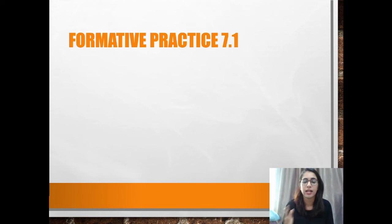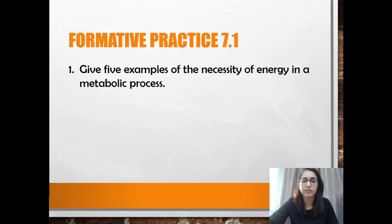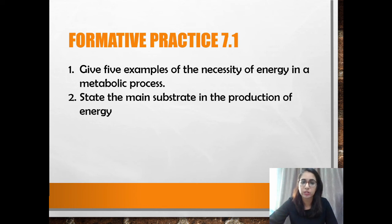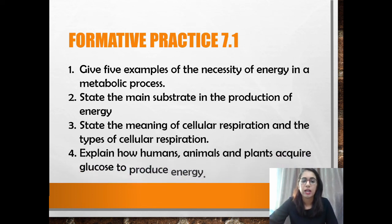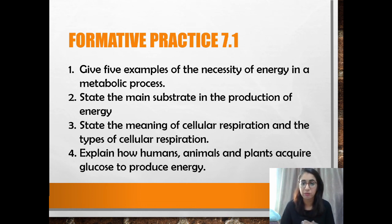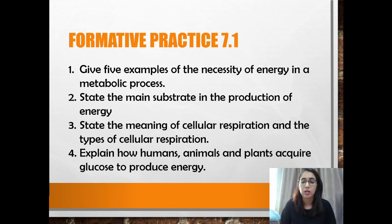Okay, so with that said, we are done for subtopic 7.1. What you are going to do next is do formative practice 7.1 from your textbook. The questions are: number one, give five examples of the necessity of energy in metabolic processes; number two, state the main substrate in the production of energy; number three, state the meaning of cellular respiration and the types of cellular respiration; and lastly, explain how humans, animals, and plants acquire glucose to produce energy. If you can answer all four questions, then you have mastered subtopic 7.1 and we can move on to the next subtopic. If not, go back to the video, learn again, take notes, and answer the questions. Thank you for watching and bye.